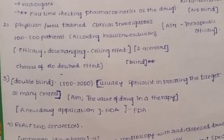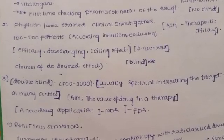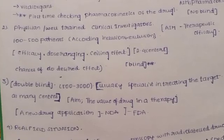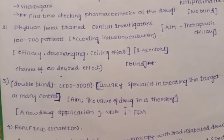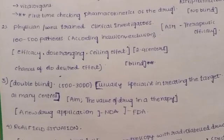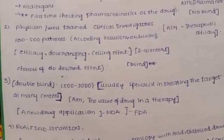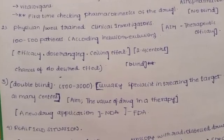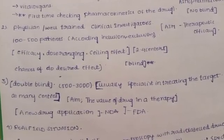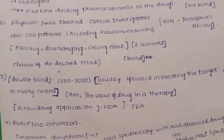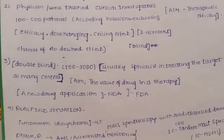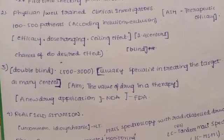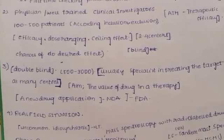The aim of Phase 1 is to assess pharmacokinetics. The aim of Phase 2 is to assess therapeutic efficacy. In Phase 2 we inject the drug and check efficacy. The efficacy, dose ranging, and ceiling effect are identified. Phase 2 is conducted at two to four clinical centers.